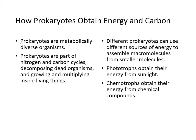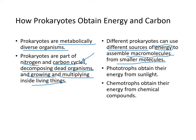Prokaryotes are metabolically diverse organisms and are part of the nitrogen and carbon cycles. They decompose dead organisms and grow inside living things. Different prokaryotes use different energy sources — phototrophs obtain energy from sunlight, while chemotrophs obtain energy from chemical compounds — to assemble macromolecules from smaller molecules.